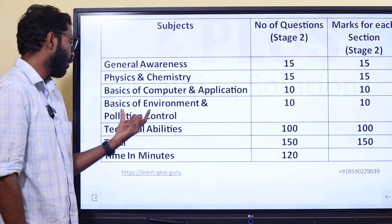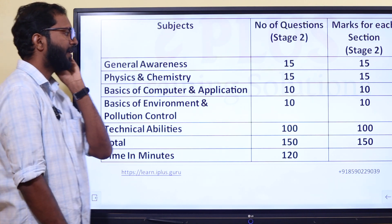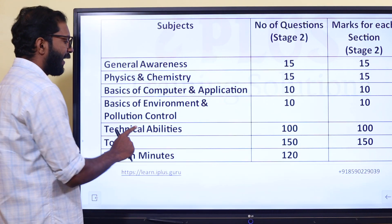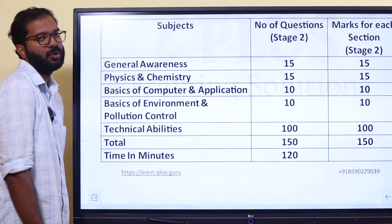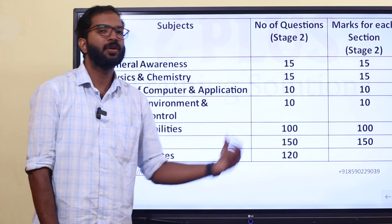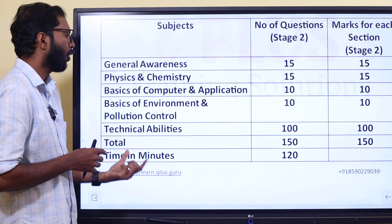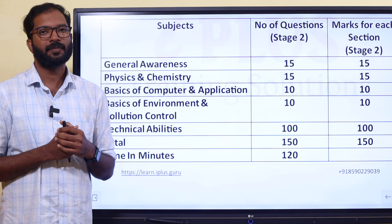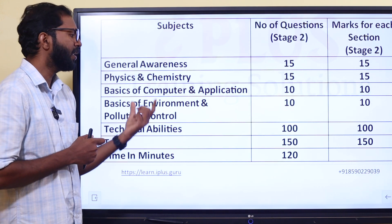We will select basics of environment and pollution control — 10 marks. For technical abilities: 100 marks, 100 questions. So the total is 180.